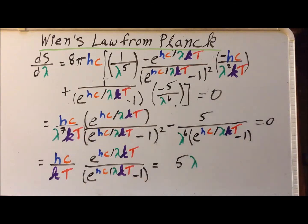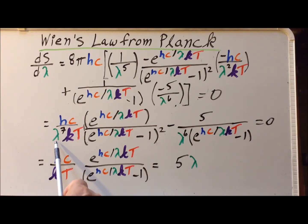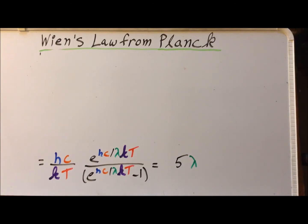While this expression is very complicated, we can simplify quite a bit. First, we multiply by e to the Hc divided by lambda kT, to the minus one, to the first power, eliminating that part of the denominator and reducing the other factor to the first power. Then we multiply each side by lambda to the seventh power, canceling it on the left and leaving lambda to the first on the right. We also add plus five lambda to the right-hand side, giving us Hc over kT times this expression equal to five times lambda.